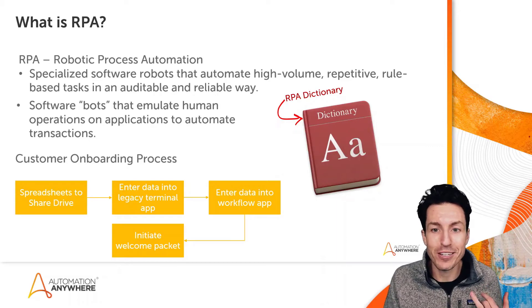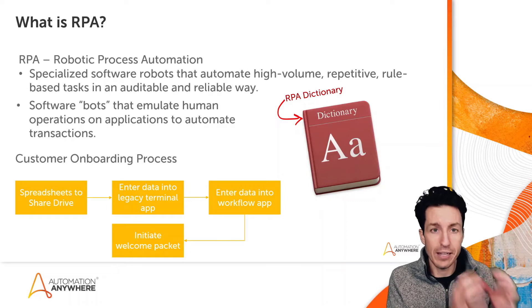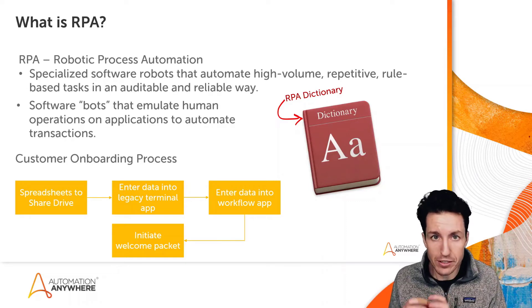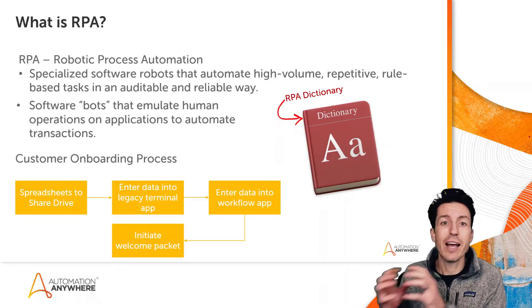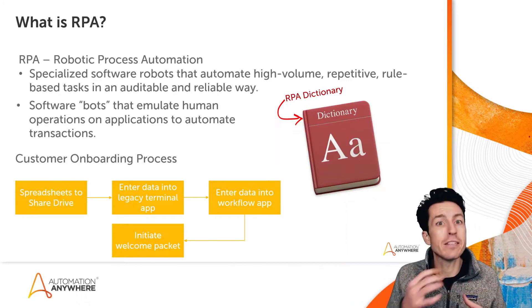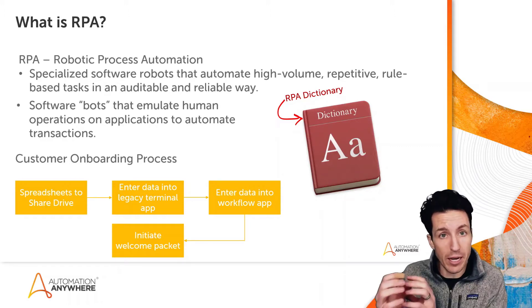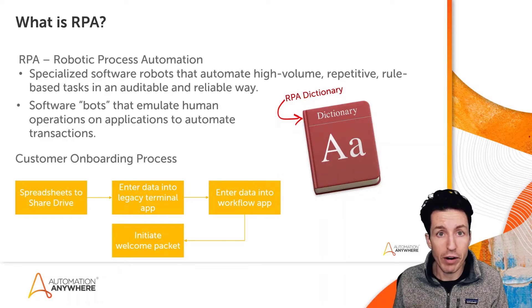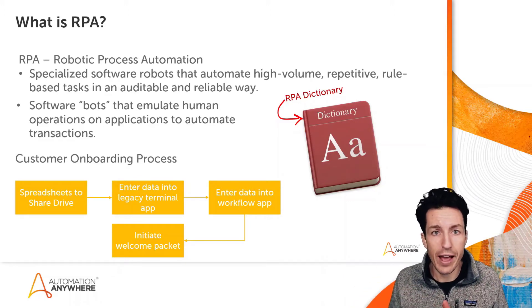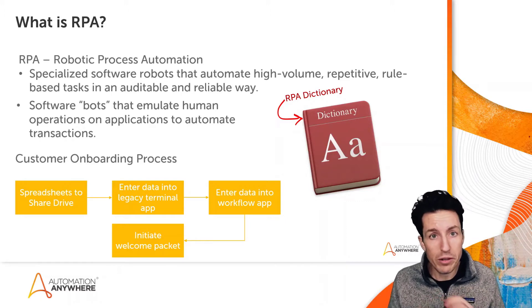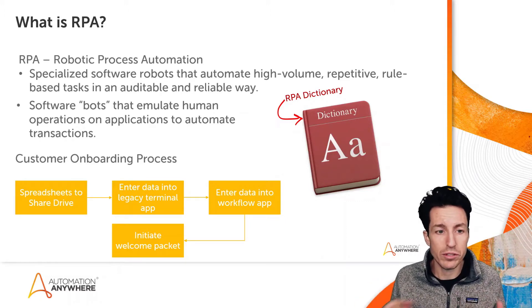Looking at that basic sample process: hopefully it's high volume with lots of new customers onboarding all the time. It's repetitive — the same thing every time: take the spreadsheet, enter data into the terminal application, enter some of the same data into the workflow application, initiate the welcome packet. It's rule-based. There might be exceptions at each step, like a missing zip code or an invalid US address, and the bot can accommodate those rules the same way a human could.